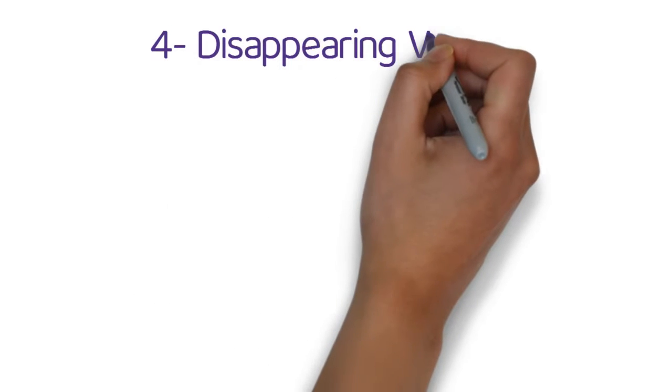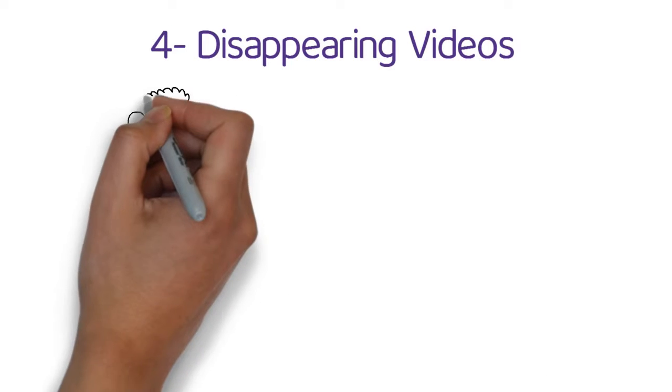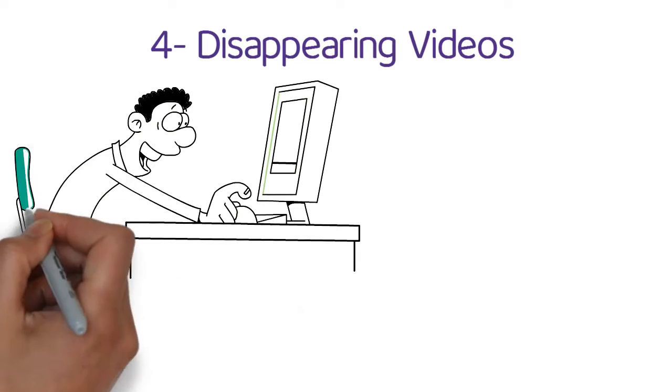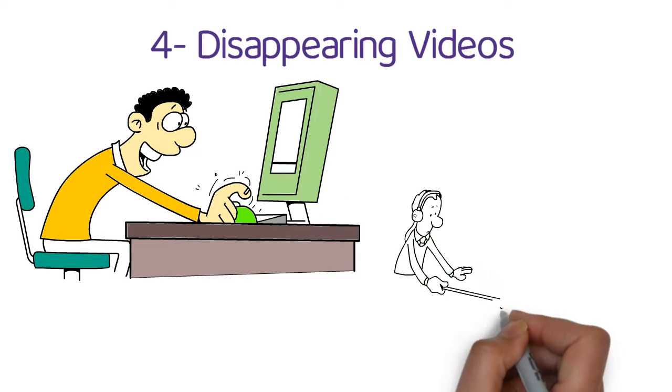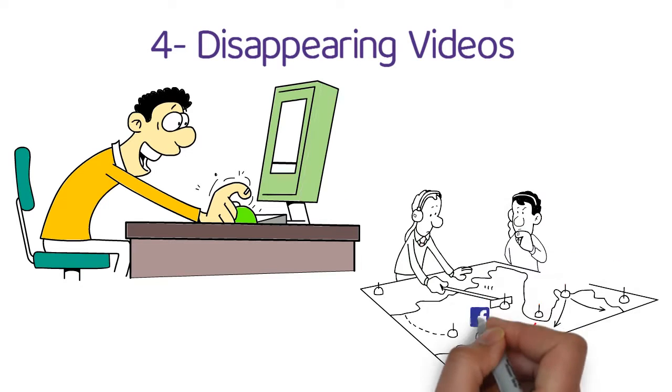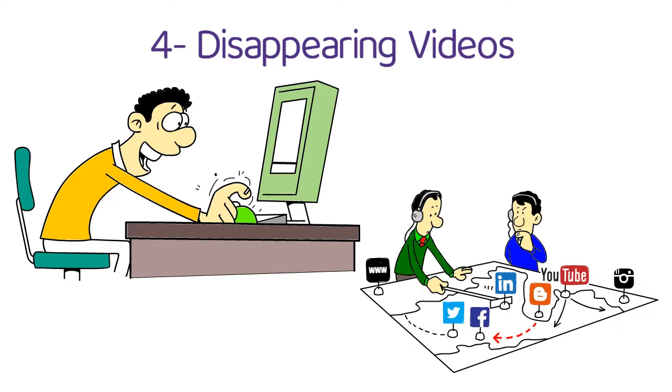4. Disappearing videos. Disappearing videos, like those you'll find in Snapchat, Facebook Stories, and Instagram Stories, can add a sense of urgency, making your followers more likely to watch them.